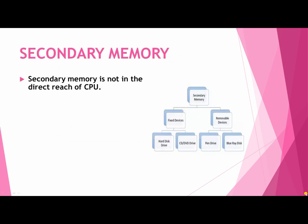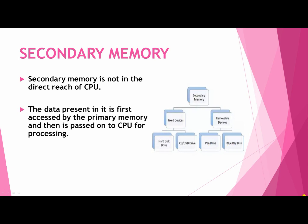Next we will discuss secondary memory. Secondary memory is not in the direct reach of the CPU. Secondary memory includes fixed devices such as hard disk drive, CD and DVD drives, and removable devices such as pen drives, Blu-ray disk, CD and DVD. The data present in it is first accessed by the primary memory and then passed on to the CPU for processing.